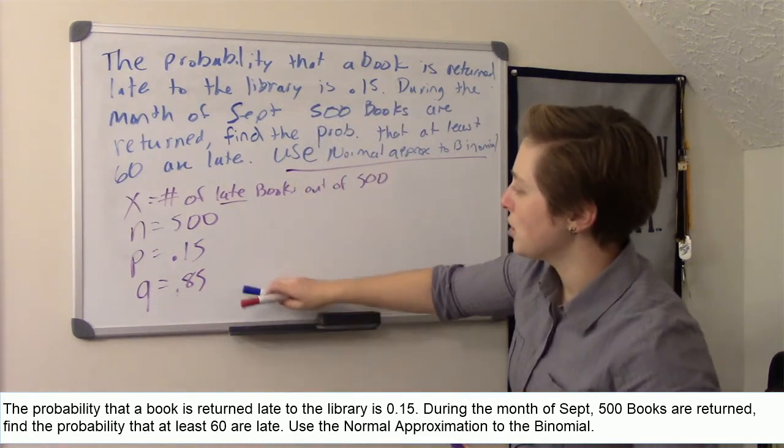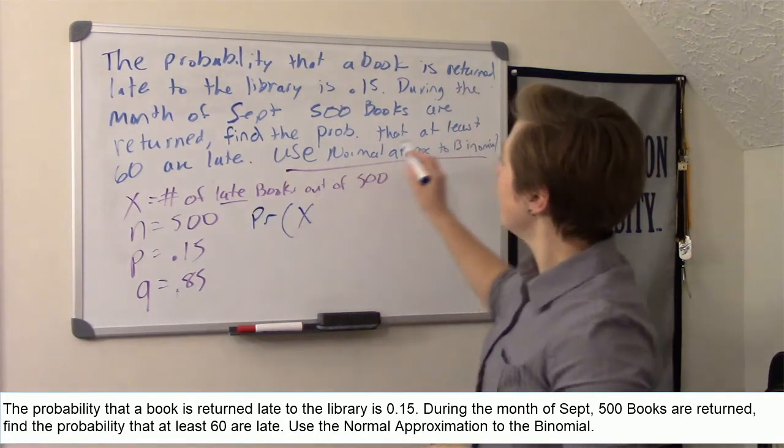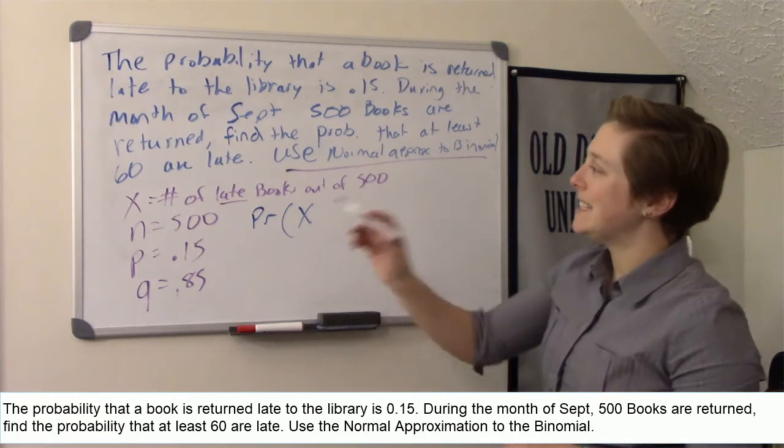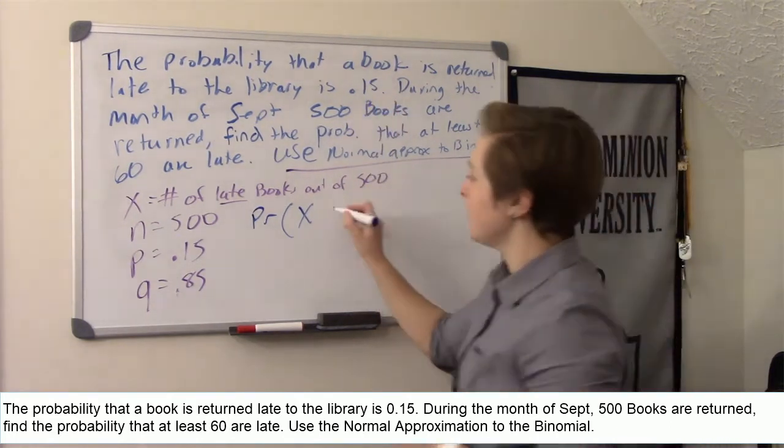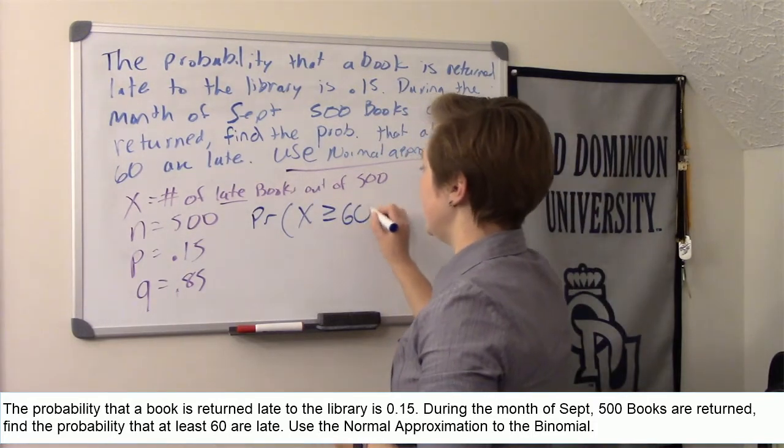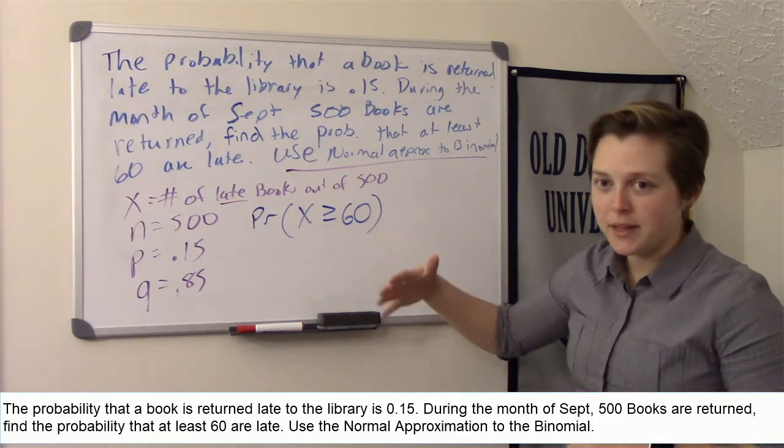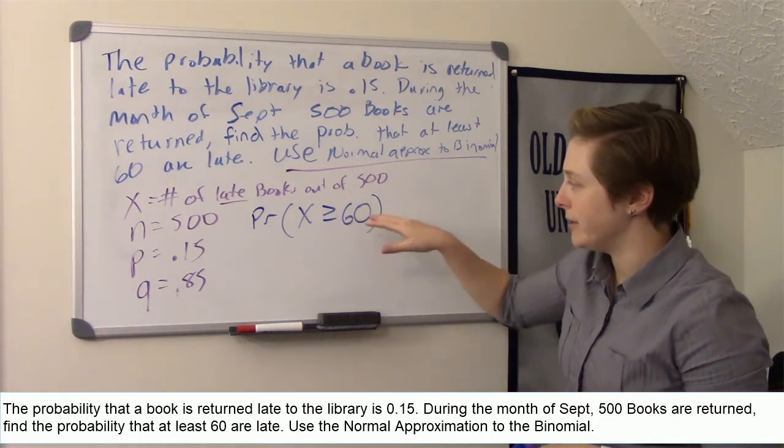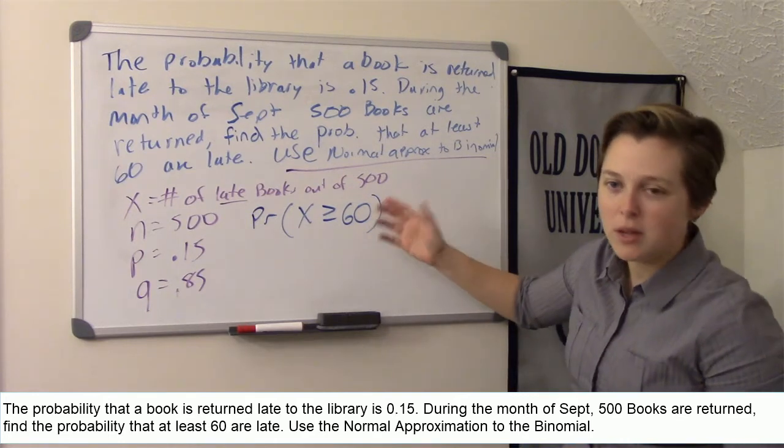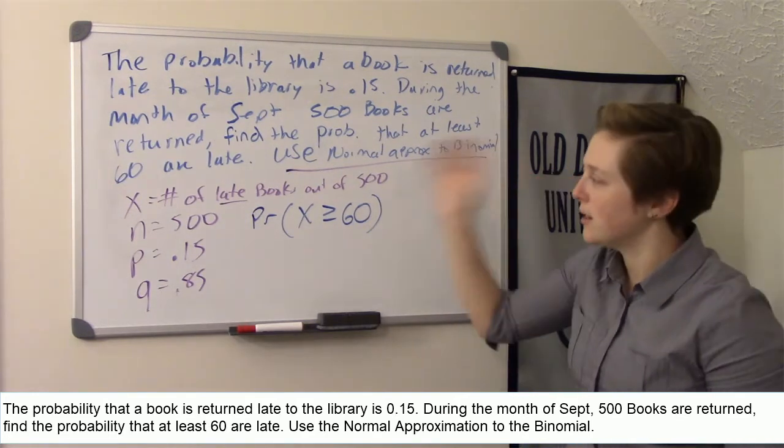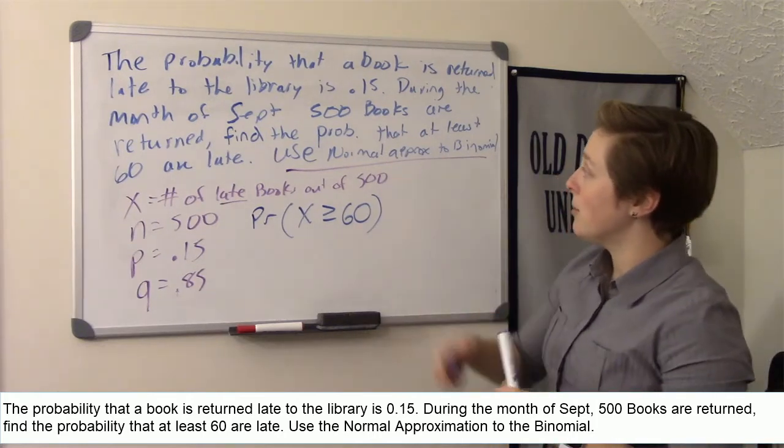So what are we trying to do? We're trying to find the probability that at least 60 are late, which means 60 or more. x is greater than or equal to 60. And technically, x is discrete, so you could find the probability x equals 60, add to the probability x equals 61, add to the probability x equals 62, and you get all the 500, take you forever, you're not going to do that. So we're using the normal approximation.